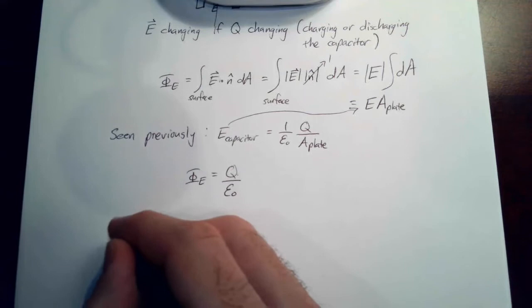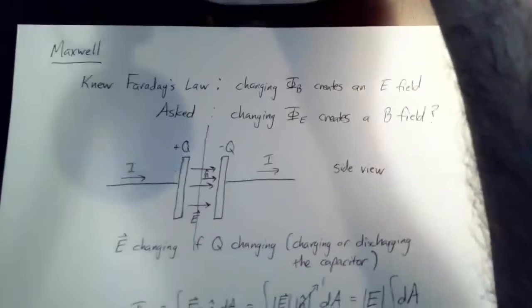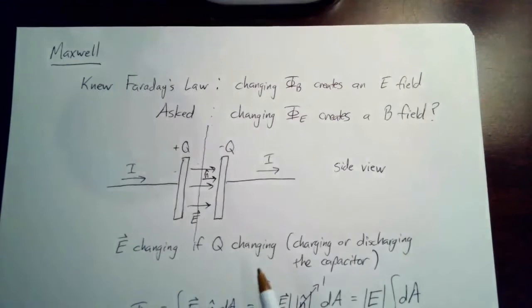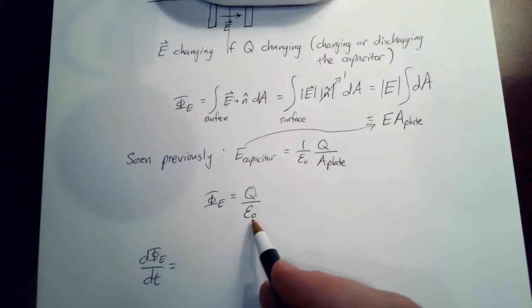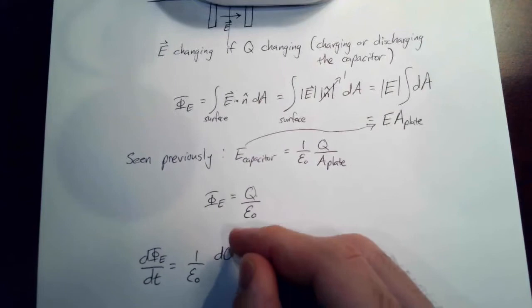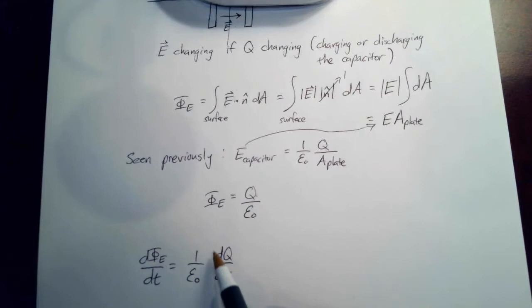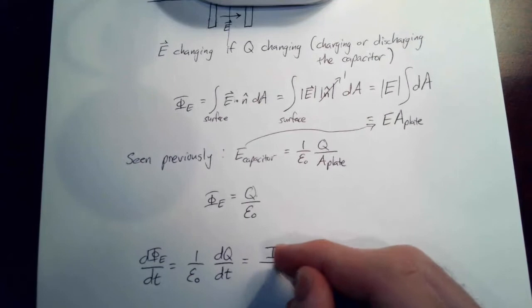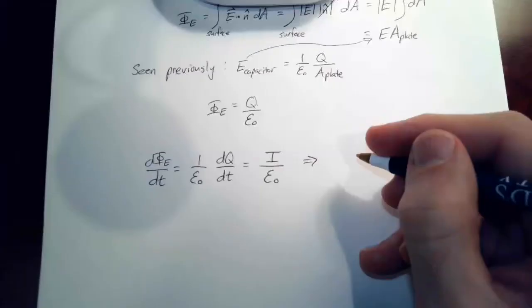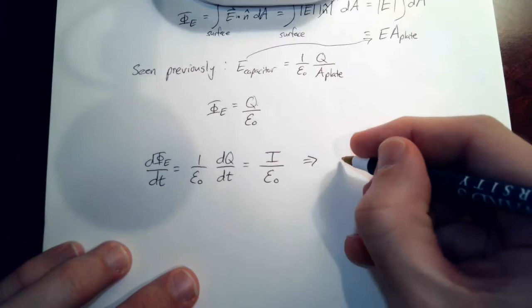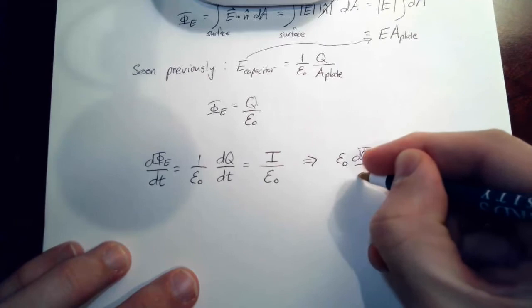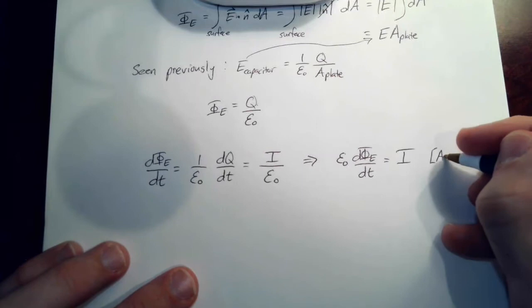If we're working by analogy from Faraday's law, what we need next is to take the time derivative of the flux — because Maxwell's assumption is that a changing electric flux creates a B-field. Taking the time derivative of Φ_E = Q/ε₀: since 1/ε₀ is a constant, we're left with dQ/dt, which is just the current I. So dΦ_E/dt = I/ε₀, which implies that ε₀ times the rate of change of the electric flux equals the current, measured in amperes.